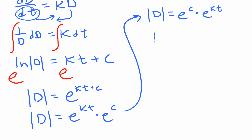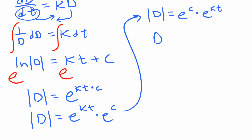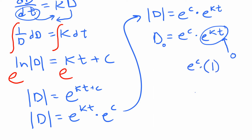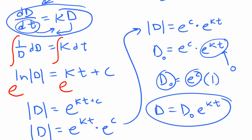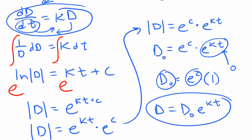We can write |D| = e^C · e^(Kt). The absolute value of D can just become D because the difference is always going to be positive. To determine e^C, we substitute t = 0: that gives e^C = D₀, the initial difference value. So our solution becomes D = D₀ · e^(Kt).